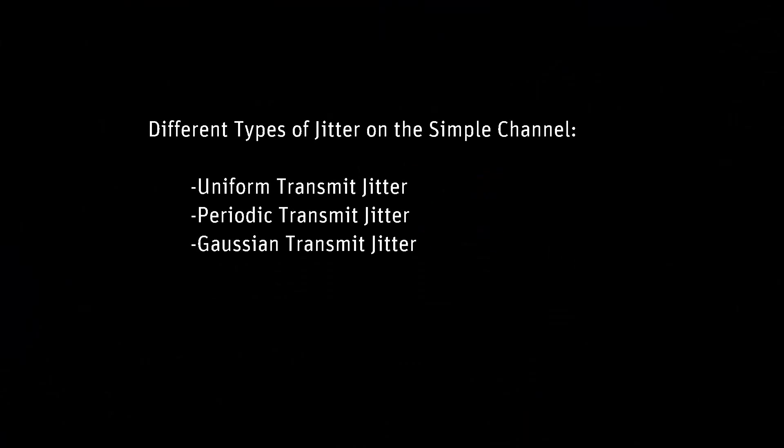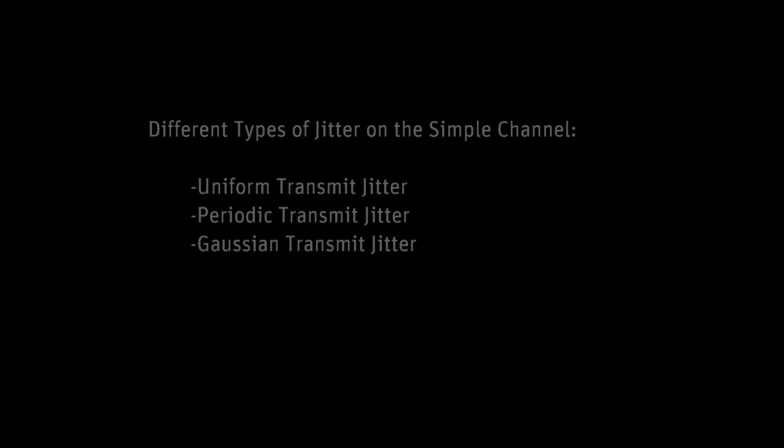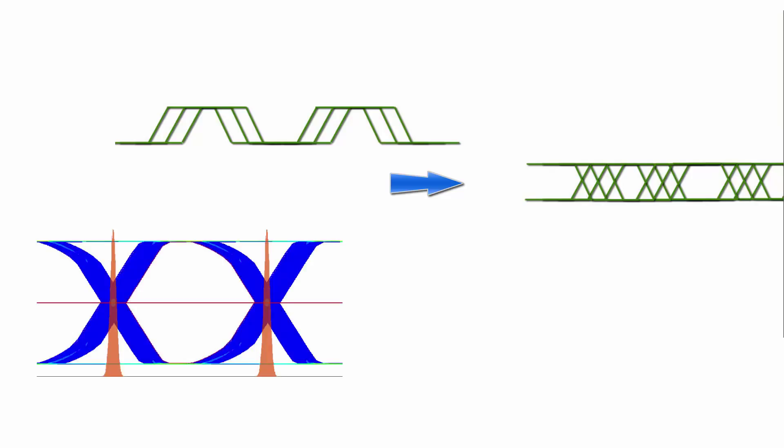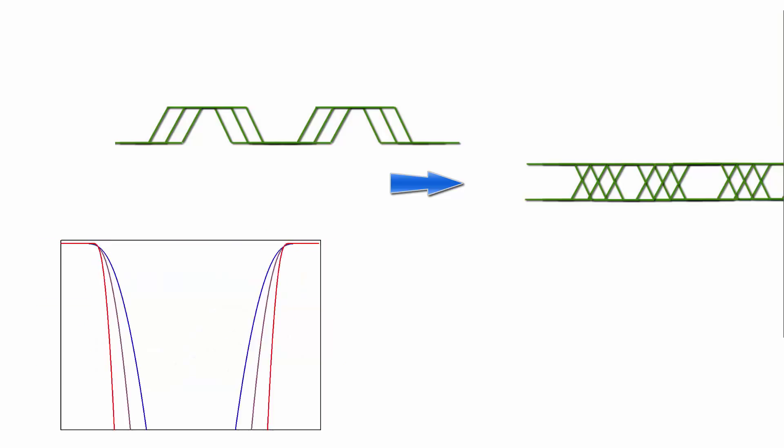In the previous video in this series, you learned how to solve the simple channel with Verify and QuickEye. Now in this video you'll learn how uniform, periodic, and Gaussian transmit jitter affect the simple channel. Use the differential eye source to specify the transmit jitter parameters. Transmit jitter is variation in the timing of the rising and falling edges. It creates a variation in the crossing times in the eye diagram at the receiver. QuickEye selects a value from the jitter distribution at random and applies the displacement value to each edge in turn. Histograms of crossing times show the distribution of jitter. Verify incorporates the jitter distribution into its bit error rate calculation.